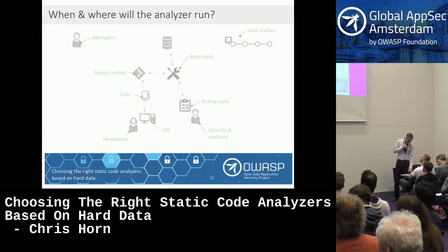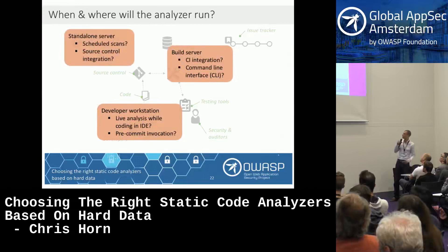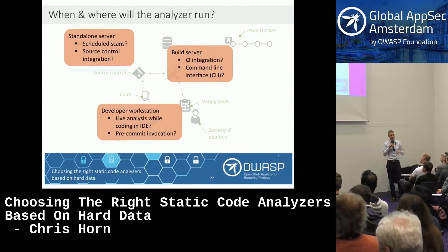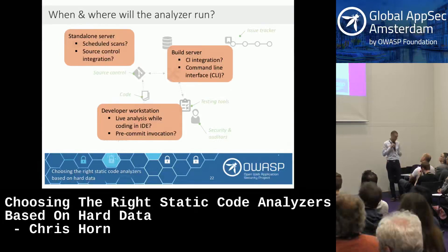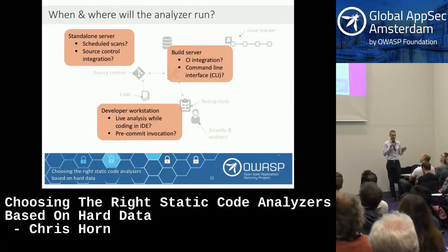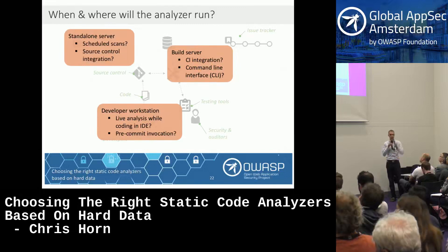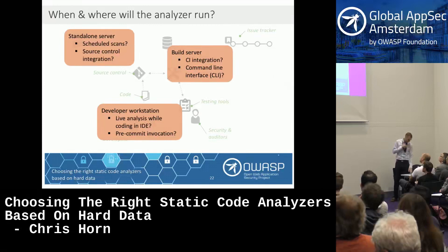When looking at process integration, there are several places analyzers can run: on the developer's workstation live while editing code, on-demand as a pre-commit check, on standalone servers tied into a build server, or as nightly builds. Some people run faster checks in the IDE and then run full suite scans nightly — using different analyses in different parts of their build pipeline. A command line interface integration is a very common way of hooking into build servers, but a lot of these tools also have dedicated plugins for things like Jenkins.